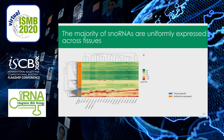I then looked at snoRNA expression across all tissue samples using a heatmap, where each row represents one snoRNA and each column represents one sample. Green indicates high expression and red indicates low expression. A color bar on the left indicates the abundance profile categorization. The majority of snoRNAs are uniformly expressed and most are also highly expressed. There is a minority of snoRNAs that are tissue-specific, mostly in the brain. In total, there are 390 uniformly expressed snoRNAs and only 85 tissue-specific snoRNAs.